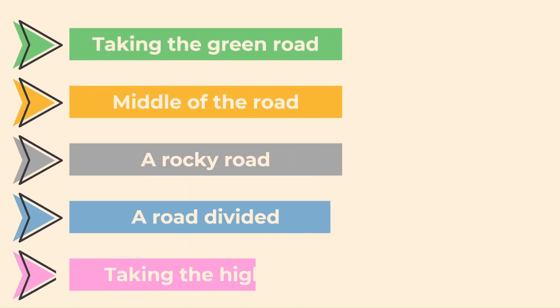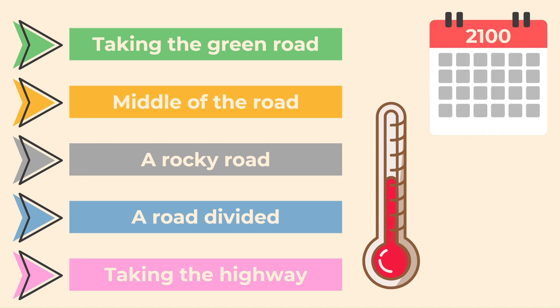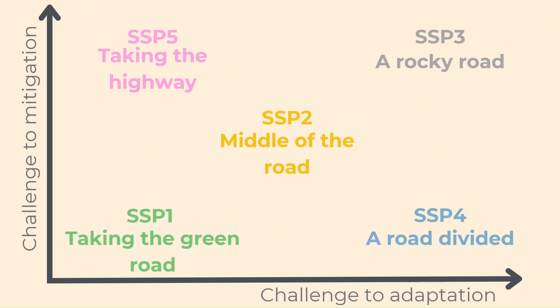The storyline can also be used to calculate global warming in 2100. This is an increase in global temperature compared with the pre-industrial level between 1750 and 1850. Here are the expected results for each scenario.